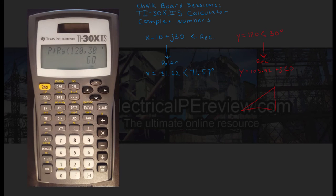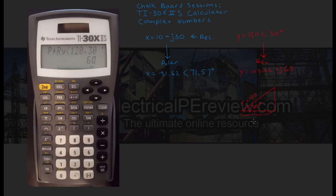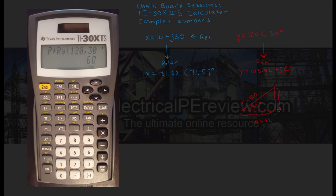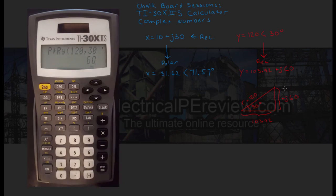Let's draw a triangle showing both our polar and our rectangular. We've got a vector of magnitude 120, got a phase angle of 30, with a real component of 103.92, and an imaginary component of plus j60.